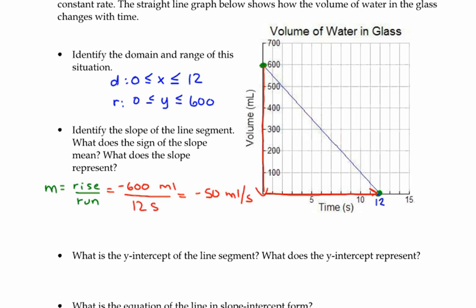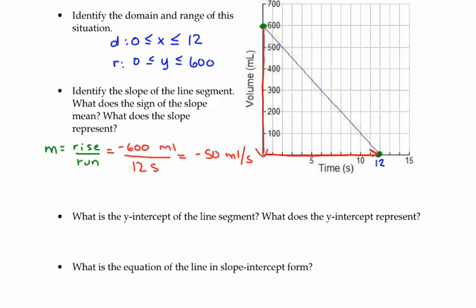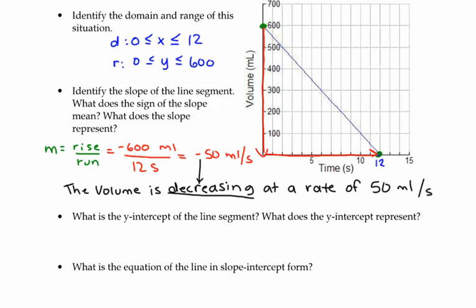So the first question asks us to find the slope. It says, what does the negative sign mean? Why is it negative? What's going down? The volume. So the volume is decreasing, is decreasing, and it's decreasing because of the negative. That negative sign is decreasing. At a rate of how much? At a rate of 50 milliliters per second. In our glass. That's what she's drinking. She's drinking 50 milliliters per second.